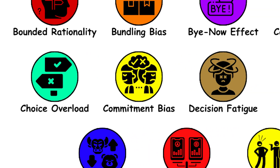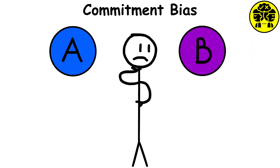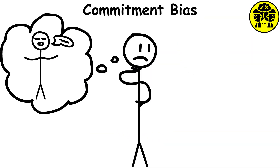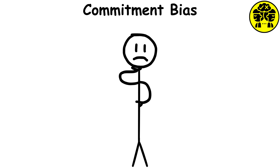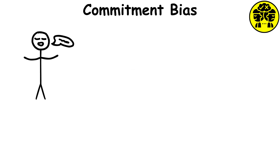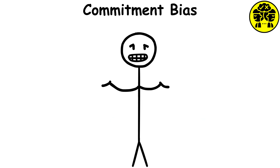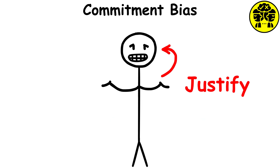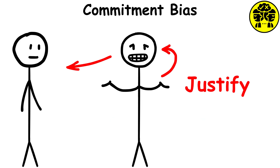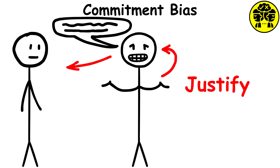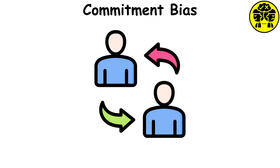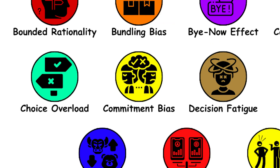Commitment bias. This describes our unwillingness to make decisions that contradict things we have said or done in the past. This is usually seen when the behavior occurs publicly. When our past decisions lead to unfavorable outcomes, we feel the need to justify them to ourselves and others. This results in us developing an argument supporting this behavior, which can cause us to change our attitudes toward it.